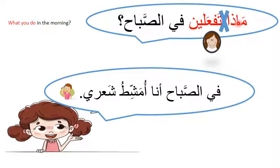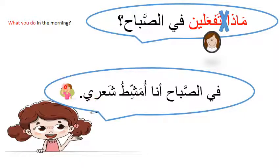We cross out ماذا تفعلين and start answering from في الصباح, the time adverb. For example, the girl will say: في الصباح أنا أمشط شعري — in the morning, I comb my hair. Always remember when asking a girl, change the verb by adding ين at the end. Pause the video and practice saying the question and the answer.